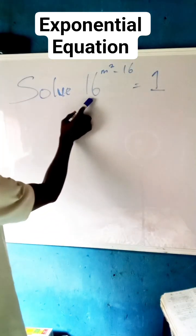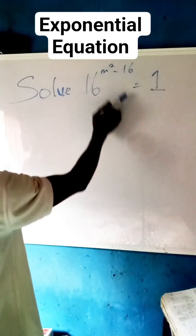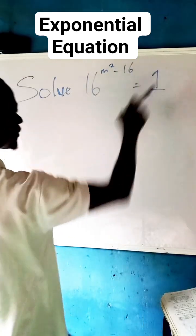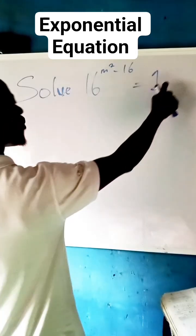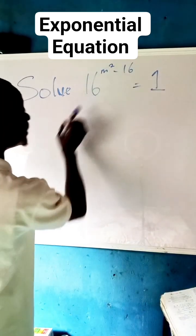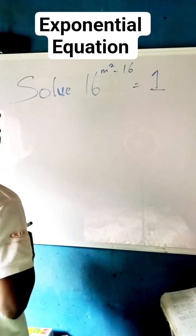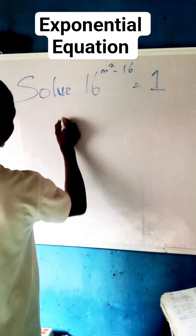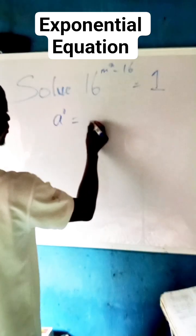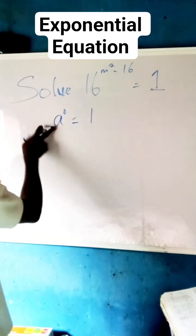Do you know that we can write 1 so that it has a base of 16 and a different power? Yes. A law of indices states that if a raised to the power of zero is equal to what? One. So a can be any number.